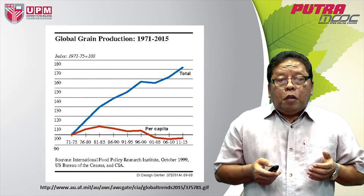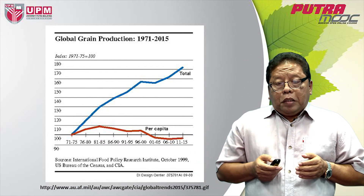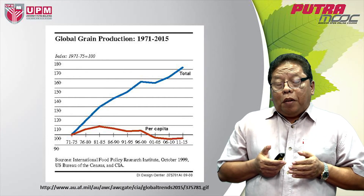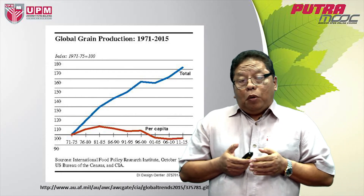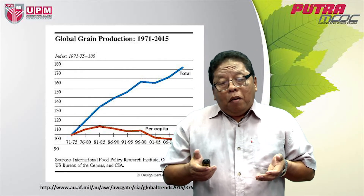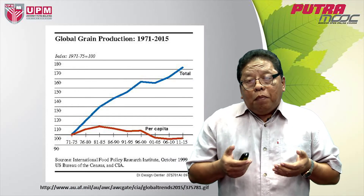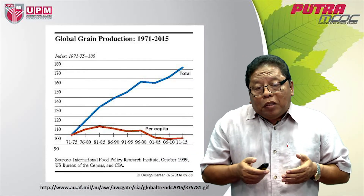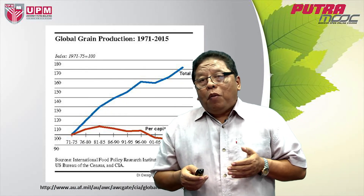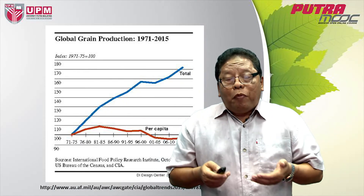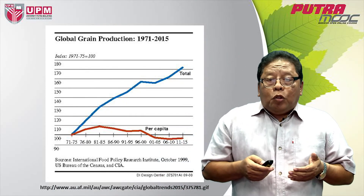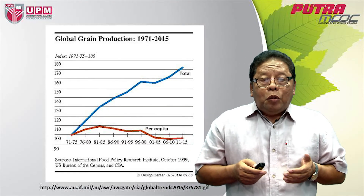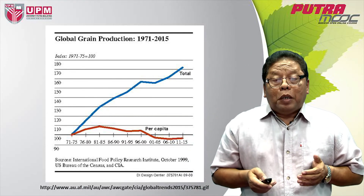This is the global grain production. There is an increase in global grain production if you look at the blue line. However, the grain share per capita per person is decreasing because there are more people to consume it, although there is an increase in total production.